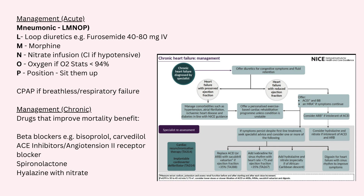In terms of surgery, if a patient has a prolonged QRS interval of greater than 120 milliseconds — or three small squares — we may want to consider cardiac resynchronization therapy. There are also a couple of drugs you should know about that improve mortality in patients with chronic heart failure, remembered with the mnemonic BASH: B for beta blockers such as bisoprolol and carvedilol, A for ACE inhibitors and ARBs, S for spironolactone, and H for hydralazine with nitrate.